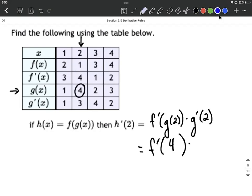Now g prime of 2, we can go ahead and evaluate that as well. Again, we're plugging in a 2, evaluating that into g prime, which works out to be 3.